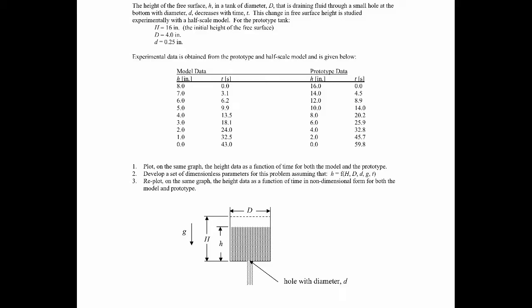In this example, we're told that the height of the free surface in a tank of fluid with diameter D is changing because it's draining fluid through a small hole at the bottom with diameter little d. We have a big tank — capital D is the diameter of the tank, capital H is the initial height of fluid — and it's draining through the small hole due to gravity, so over time the free surface of the fluid is decreasing.